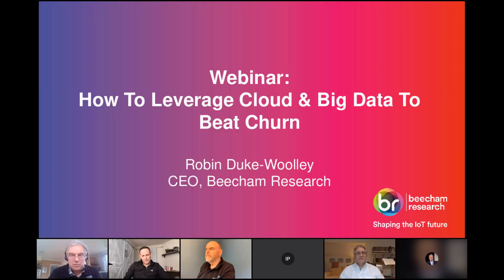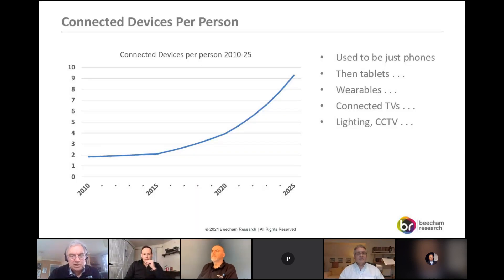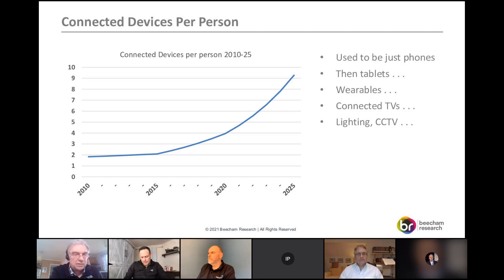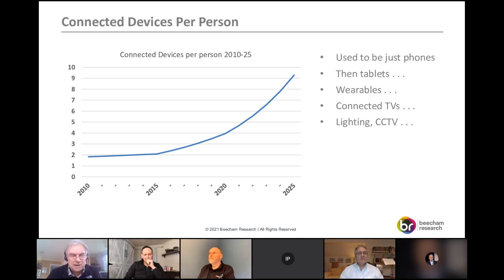Thanks very much, Jeremy. I'm going to do a fairly brief introduction to the overall smart home market as an introduction to what Plume will then talk about. The number of connected devices per person has been increasing over the last few years, and it's going to accelerate. In your home there's the smartphone connected to the home network, and then tablets, wearables, connected TVs, and lighting and CCTV. We're beginning to see real numbers of devices in home markets now.